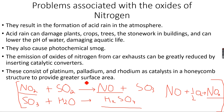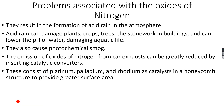In order to reduce the emissions of oxides of nitrogen from car exhaust, we use catalytic converters. We cannot control lightning — it is a natural process — so if nitrogen dioxide or nitrogen monoxide are forming due to lightning, we can't do anything about it. However, we can control the emissions from car exhaust by fitting catalytic converters.